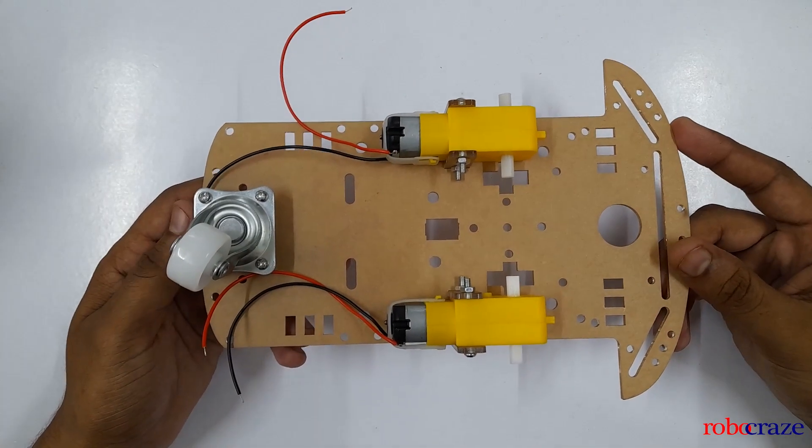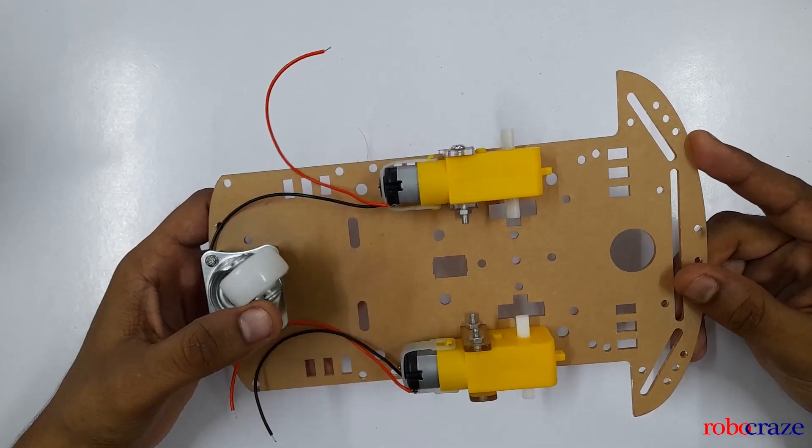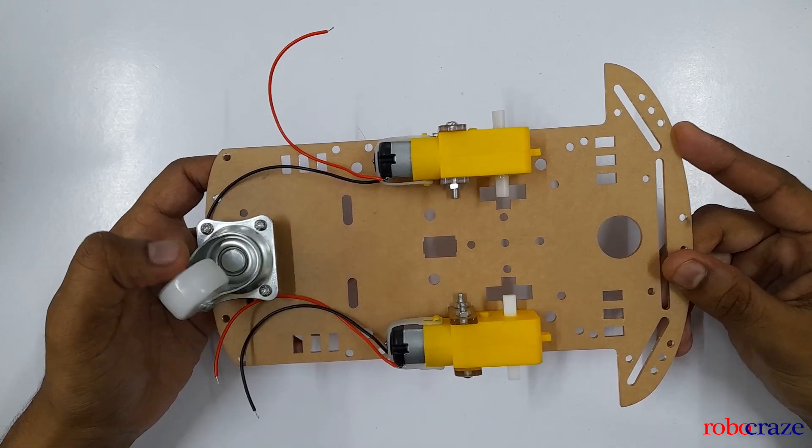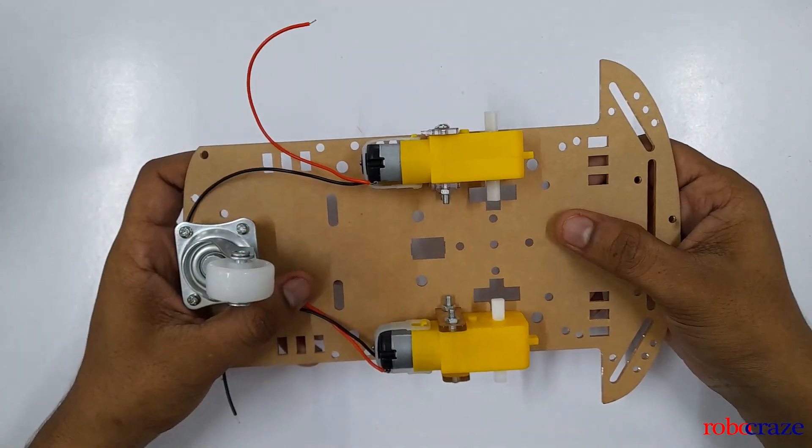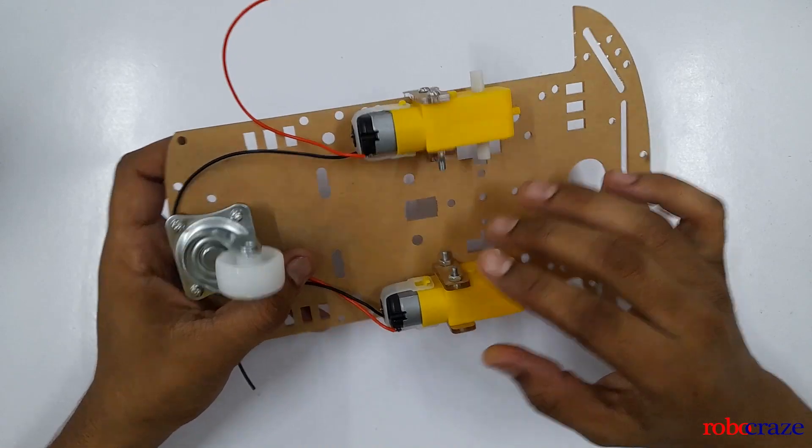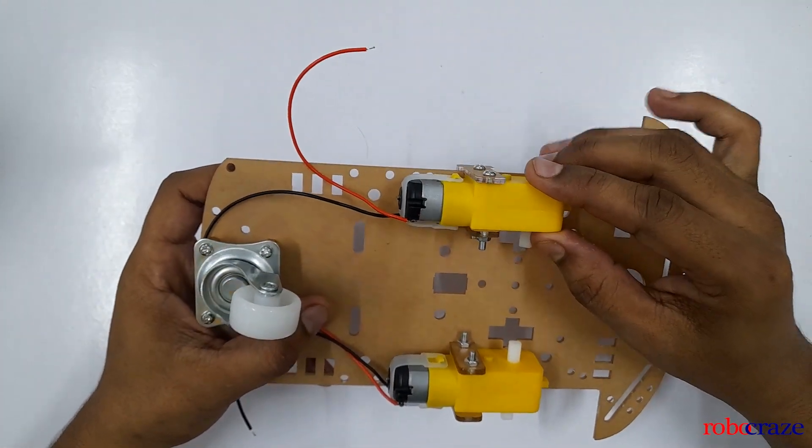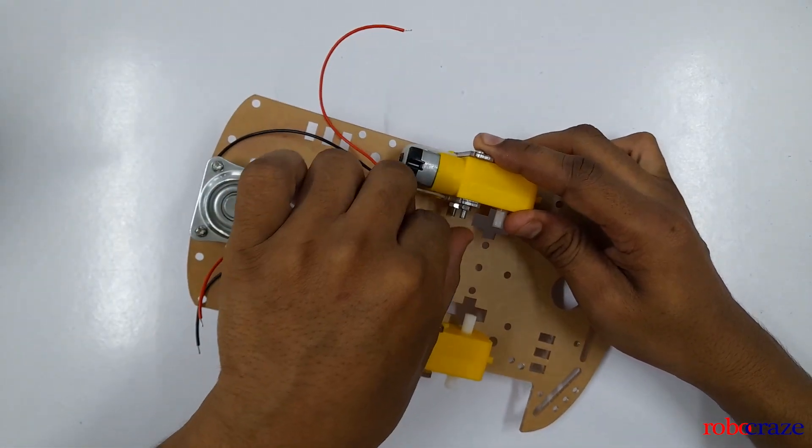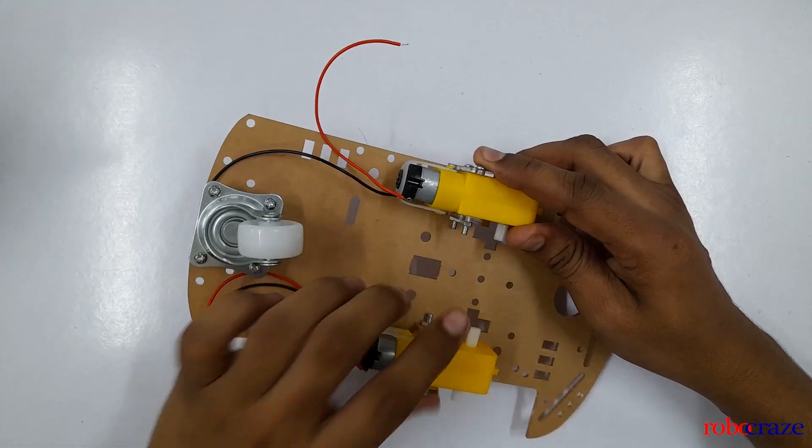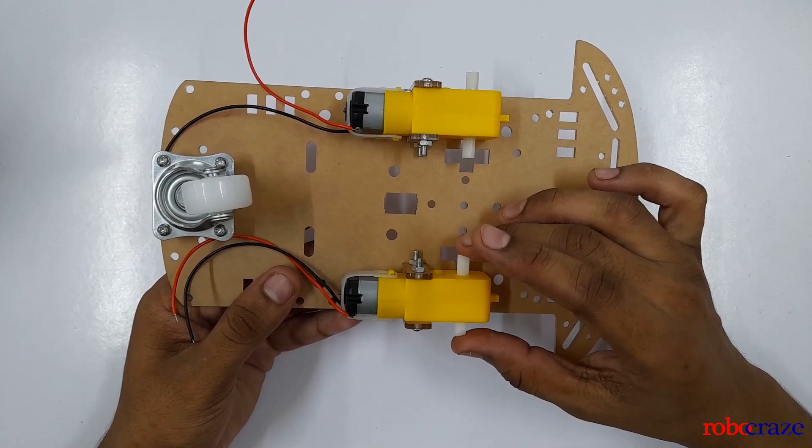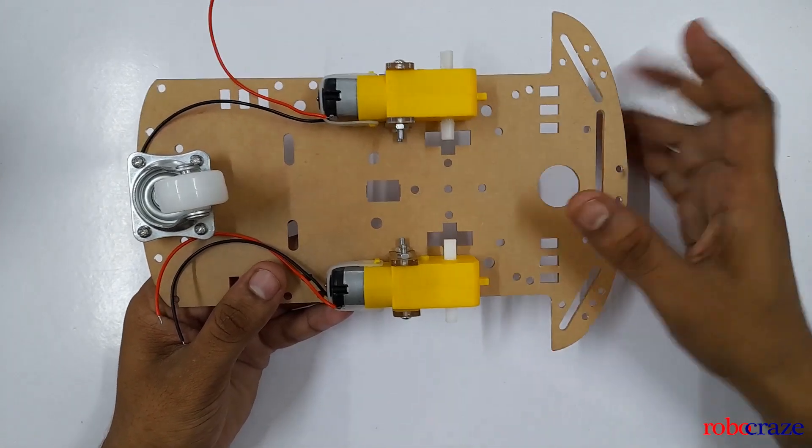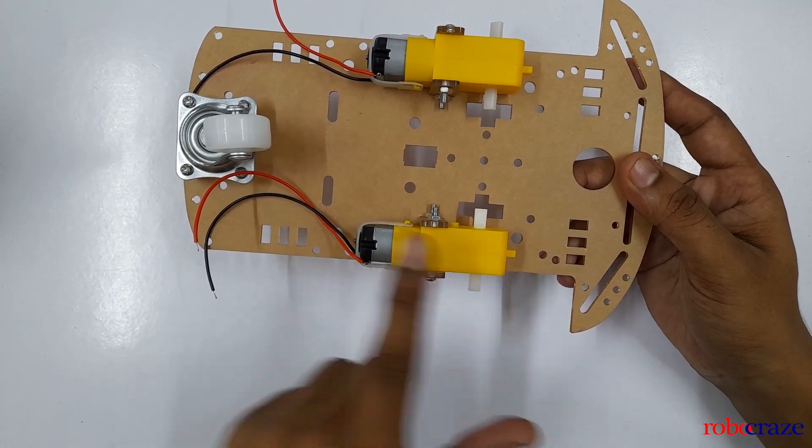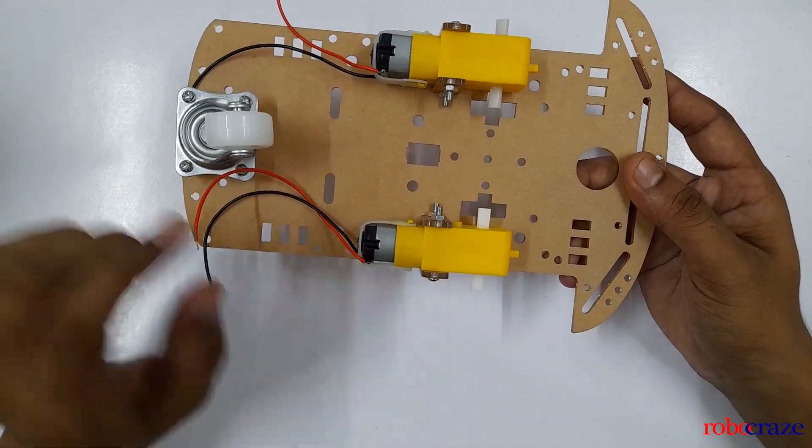This is how the chassis will look after assembling the universal wheel and DC motors. Let us quickly summarize the assembly so far. Starting with the chassis, we have inserted the fasteners and mounted the DC motor such that the nuts are in this direction. It should be inside, so always good practice to keep them inside. The positioning of the wheels motor should be on this side which is opposite to the universal wheel so that the balancing will be appropriate and the weights can be counterbalanced.